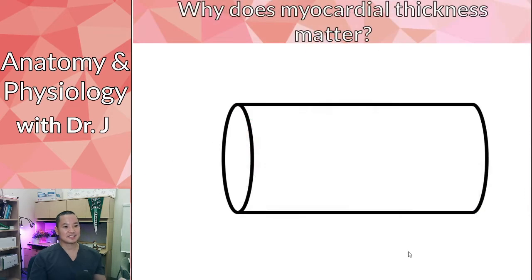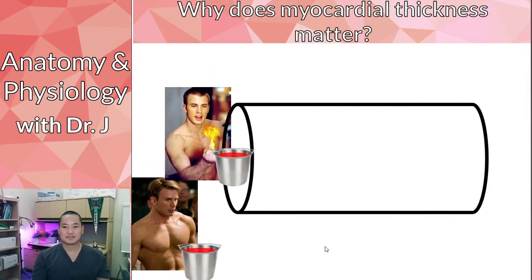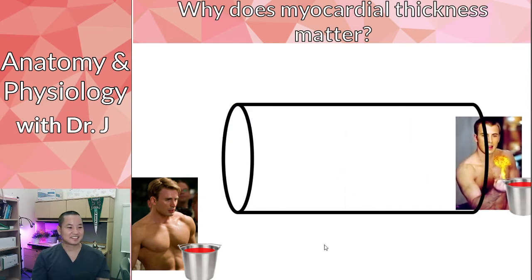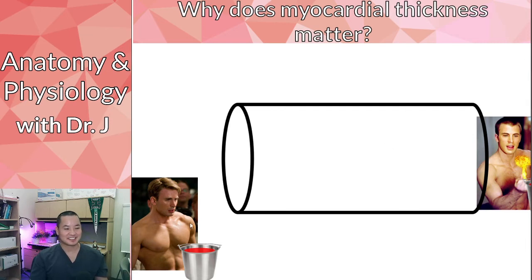Why does this myocardial thickness matter? Pretend this is part of your circulatory system and you need muscle to pump blood through it. Here we have two guys who are pretty muscular, and their job is to carry a bucket of liquid through this vessel. This is actually the same guy — Chris Evans — before the Michael B. Jordan inversion, when he was the Human Torch, versus him as Captain America, definitely with more muscle.